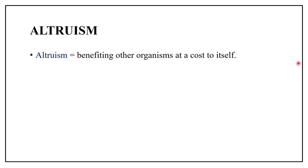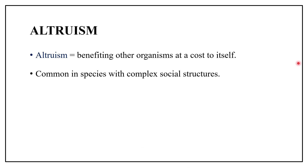What is altruism? An organism is said to behave altruistically when its behavior benefits other organisms at a cost to itself. This altruistic behavior is very common throughout the animal kingdom, particularly in species with complex social structures. For example, vampire bats regularly regurgitate blood and donate it to other members of their group who have failed to feed at night, so that it can ensure that they don't starve.